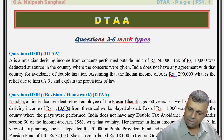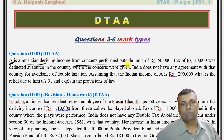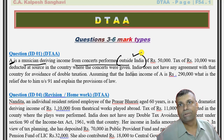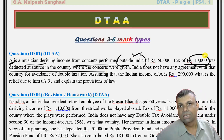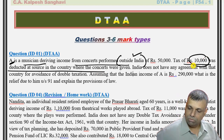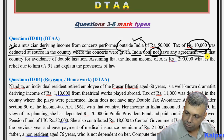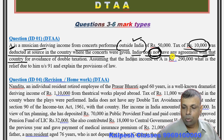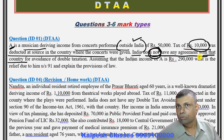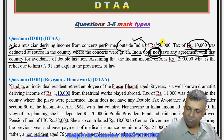From the examination point of view, you have to identify each of these situations very precisely before solving any question. Let me show you how the question wordings make a big difference. For example, in one question there is a gentleman called Mr. A, a musician who has performed concerts outside India. There is some tax deducted at source in that foreign country, and the question states that India does not have any agreement with that particular country - so you follow general domestic provisions.